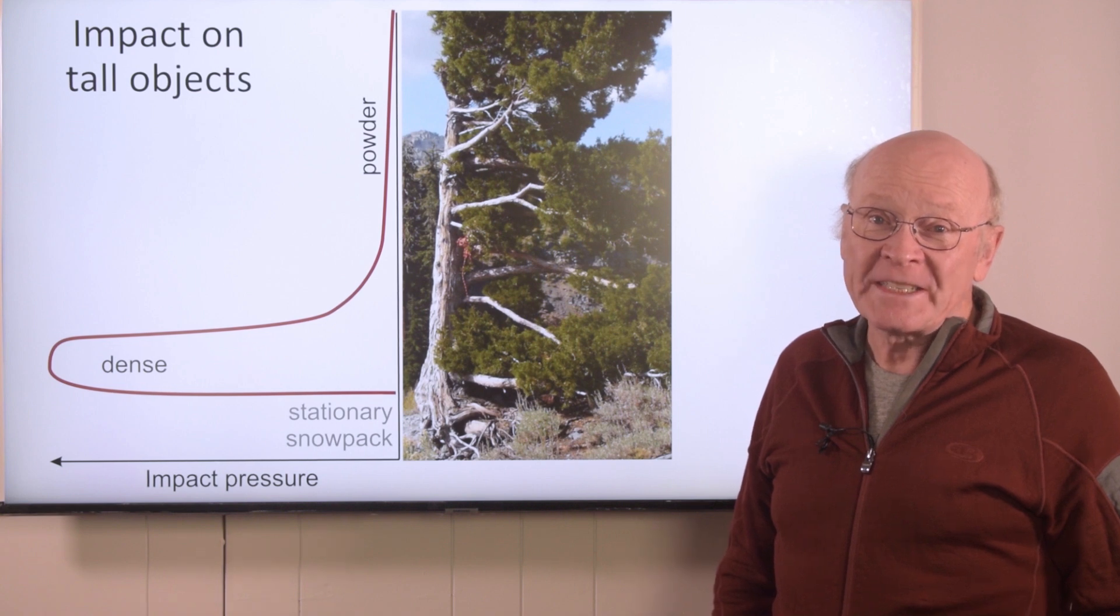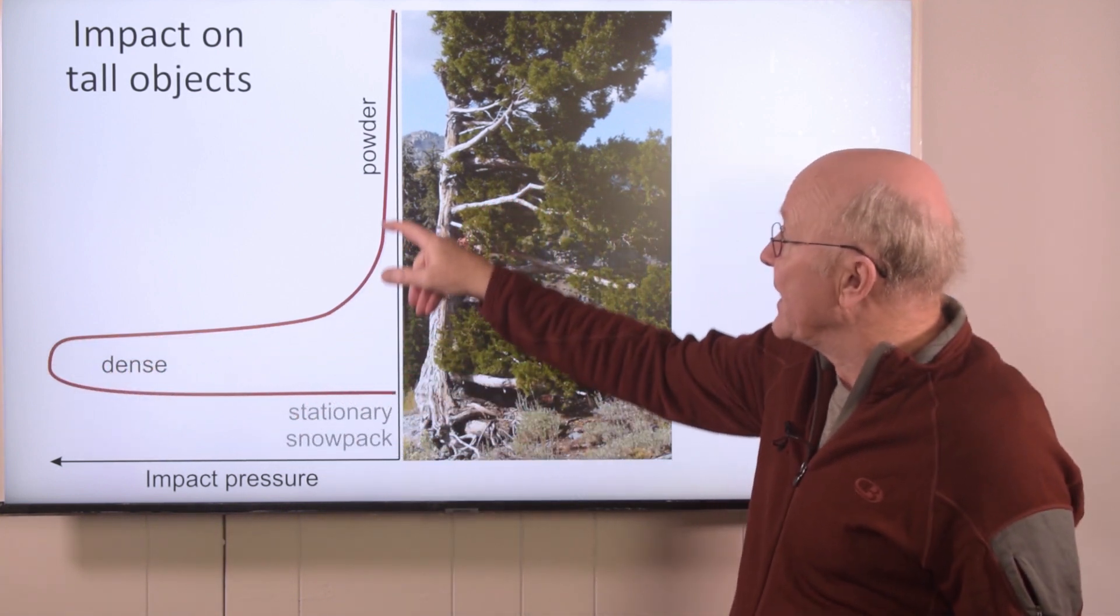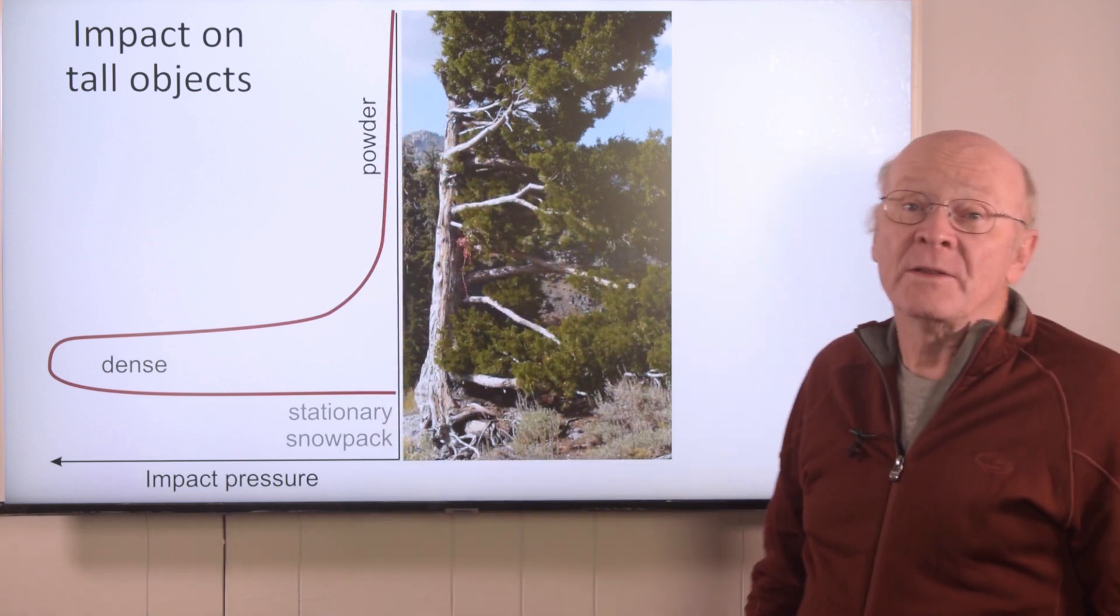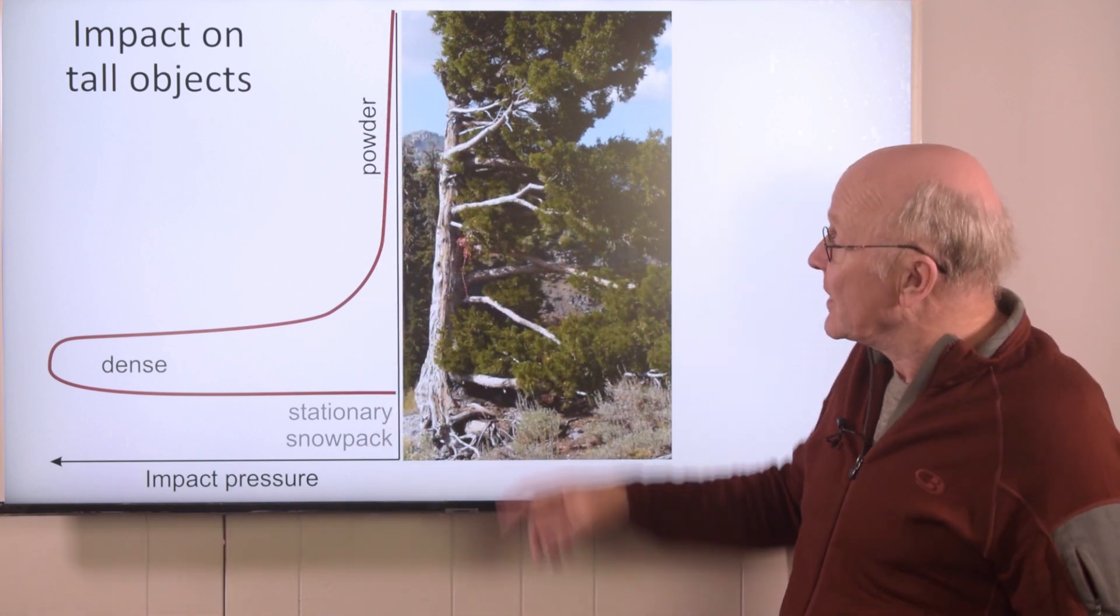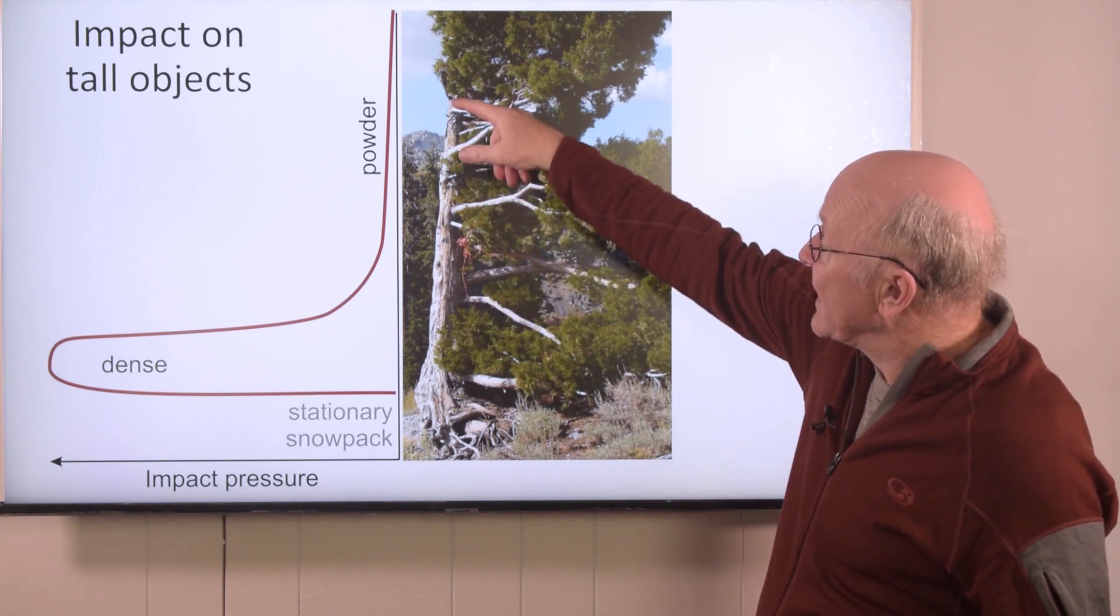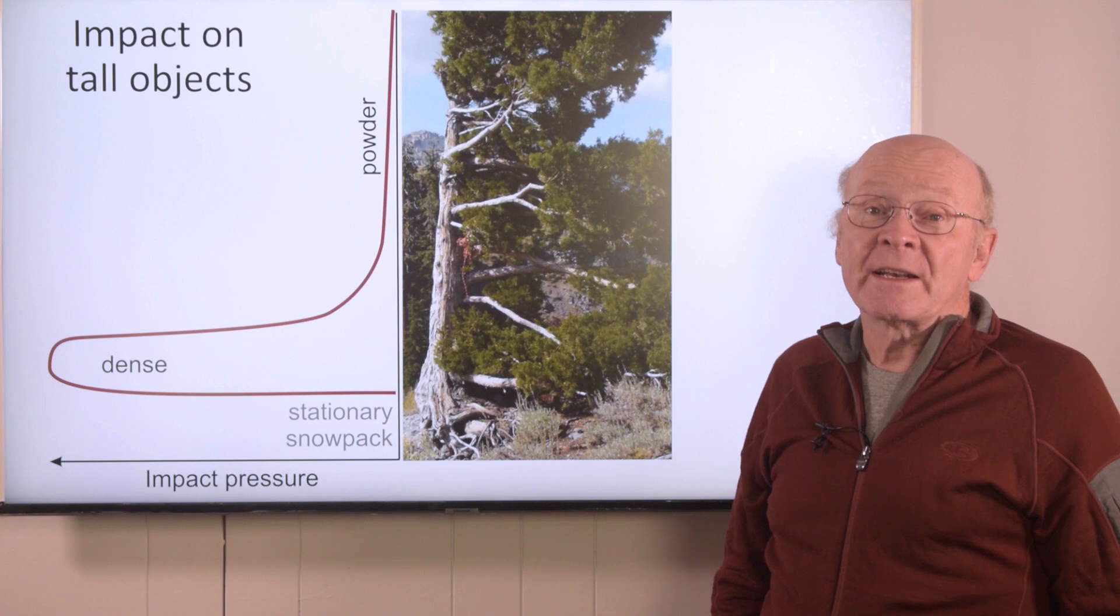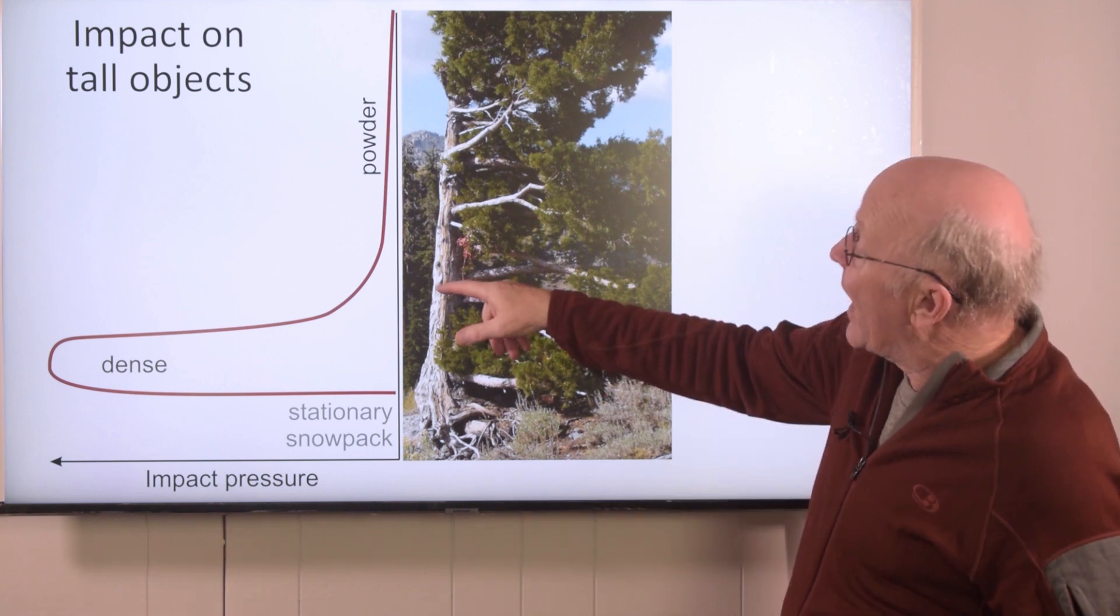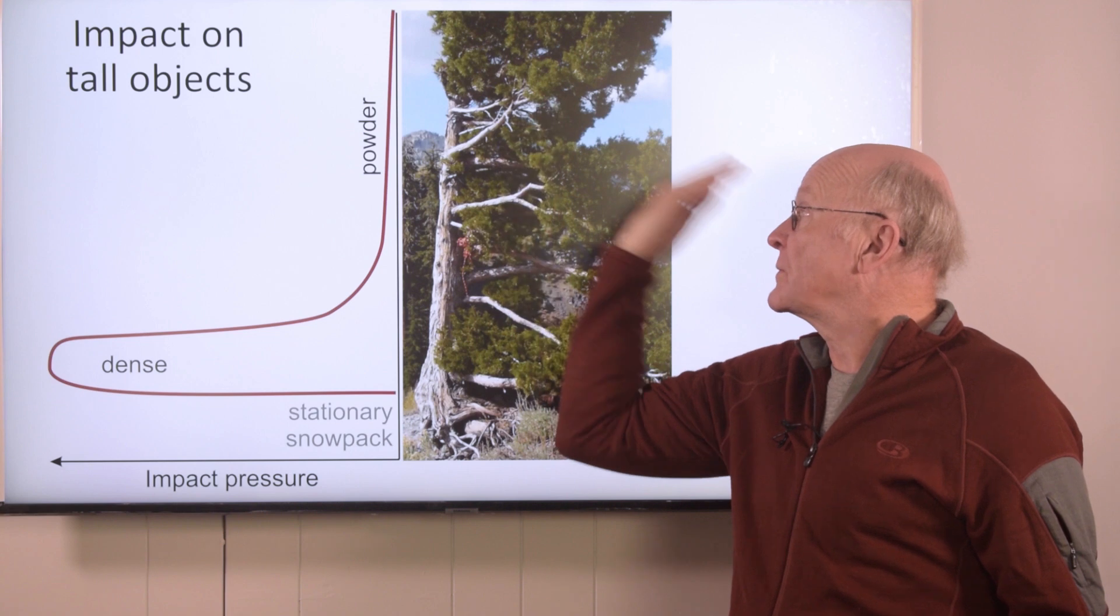The flow density, and hence the impact pressure, decreased with height, as shown by this red line. Note that well above the dense flow, the impact pressure was sufficient to break all the branches on the uphill side of this tree. Also, it appears a little more force from the powder layer high on the tree would have broken more of the roots and could have toppled the tree.